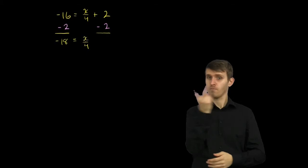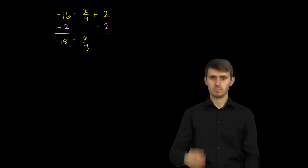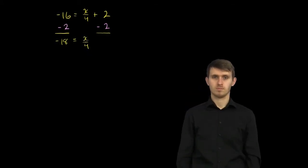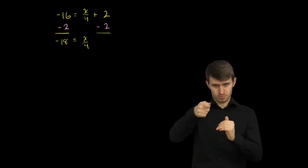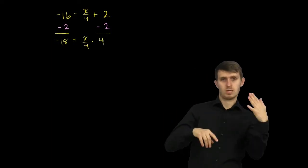And our whole goal here is to isolate the x, to solve for the x. And the best way we could do that, if we have x over 4 here, if we multiply that by 4, we're just going to have an x. So we can multiply that by 4.